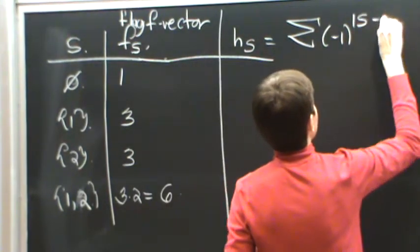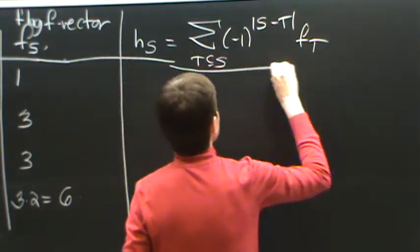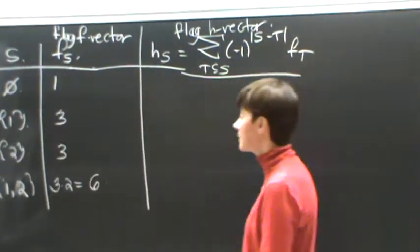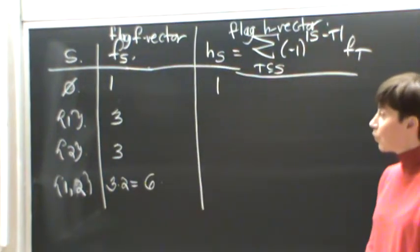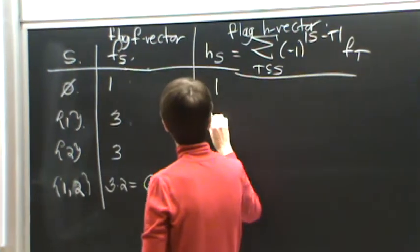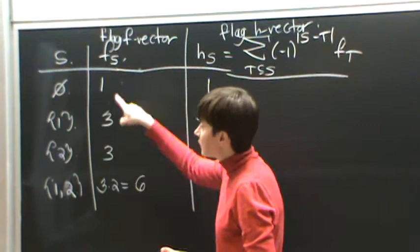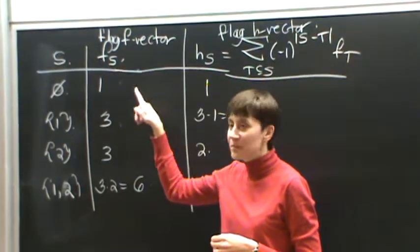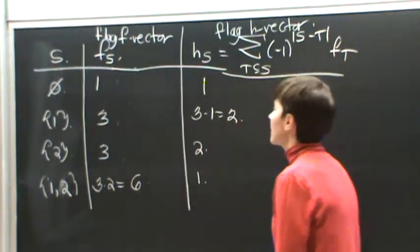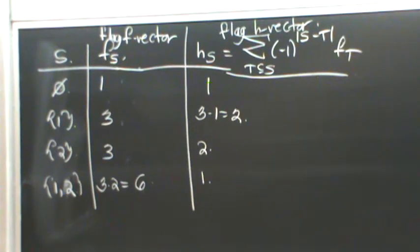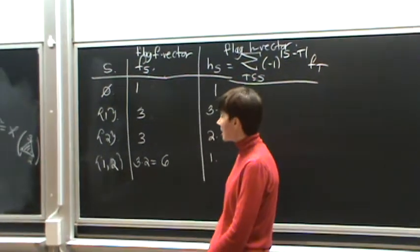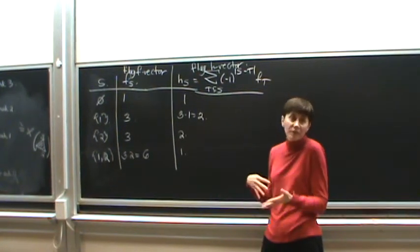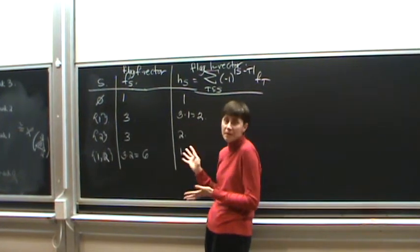There's something called the flag h-vector. This is an alternating sum of the flag f numbers. Let's start computing these. h of the empty set turns out to be the same as f of the empty set, so that's 1. h of {1} turns out to be f{1} minus f of empty, so 3 minus 1, or 2. For h{2}, it's f{2} minus f of empty, which is again 2. And then h{1,2} is f{1,2} minus f{1} minus f{2} plus f of empty — we get 1. Notice now that this data is symmetric. One reason this happens is because we're looking at the face lattice of a polytope, which has the property of shellability, and we get this symmetry. By doing this, we've removed some redundancies.